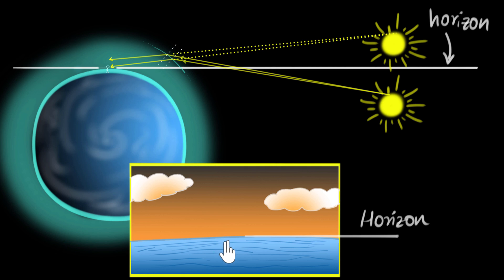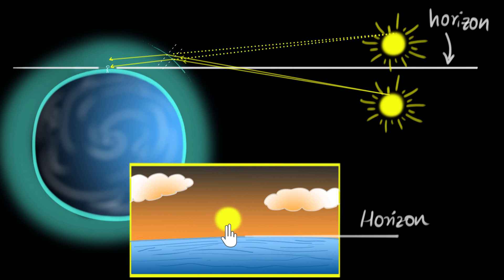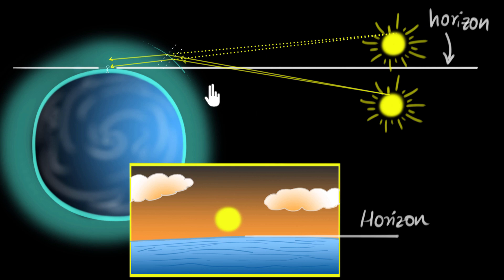So because of the atmosphere, the sun is actually below, but because the rays of light are bending towards us, right now we are seeing the sun somewhere over here. And that's why we say that we get to see the sunrise even before the actual sunrise. And similarly, this also explains why we get to see the sun after the sunset.